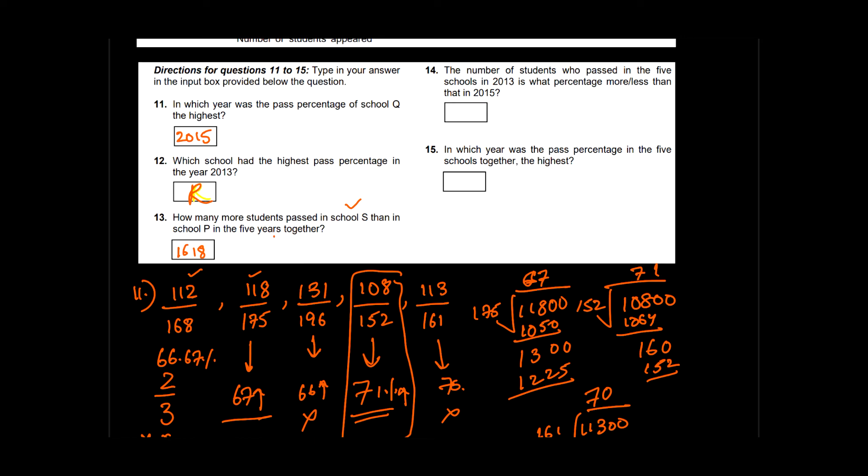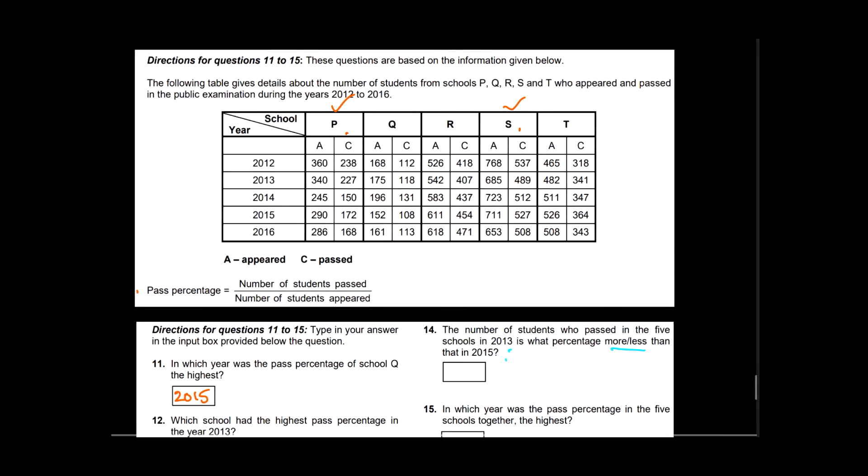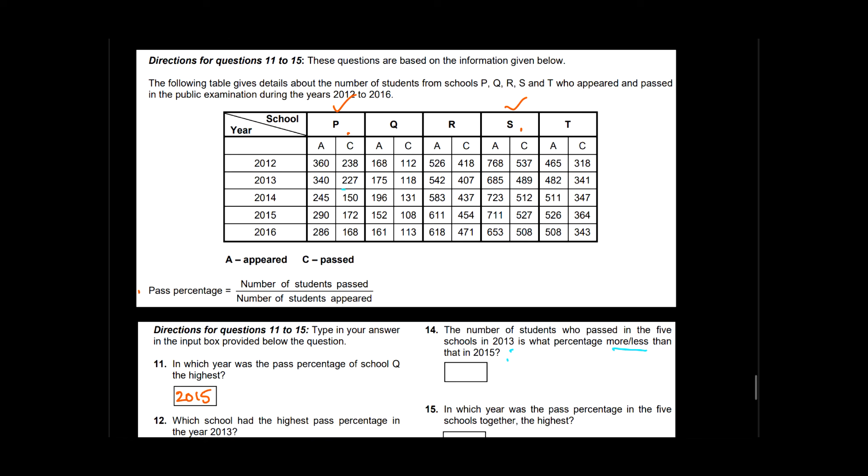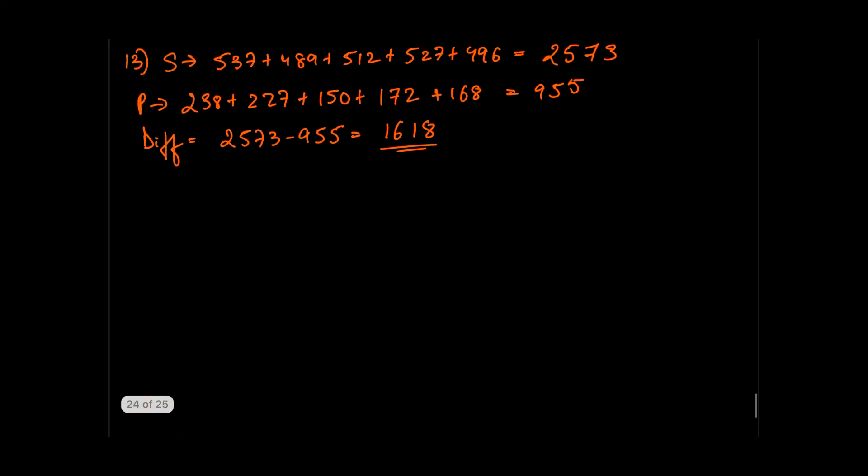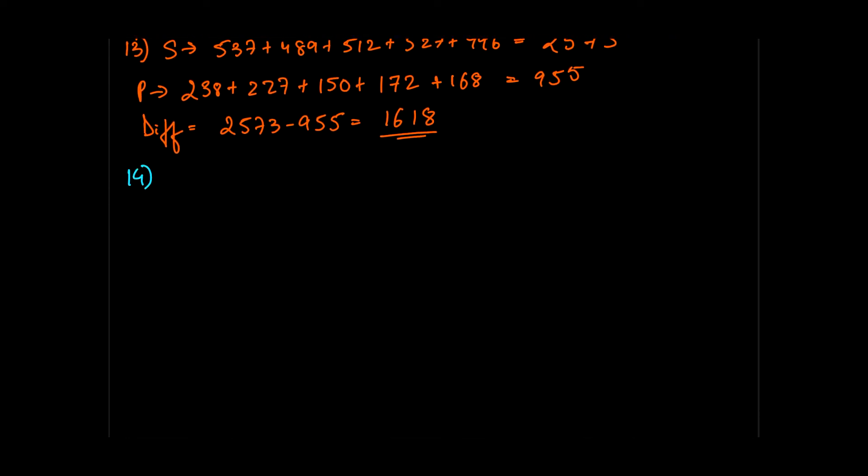Data-based questions are very important because they do not have any negative marking, so you have to surely attempt these questions. Now comes question number 14, which asks: the number of students who passed in the five schools in 2013 is what percentage more or less by 2015? So now we have to make a comparison of the data between 2013 and 2015.